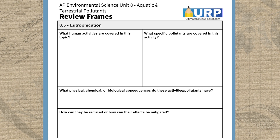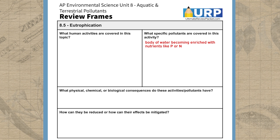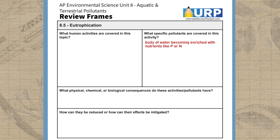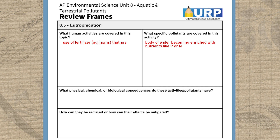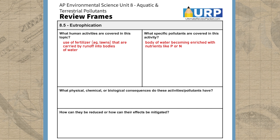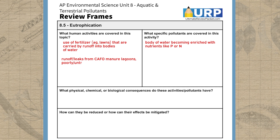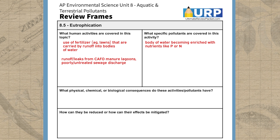Let's go through an example of how you can use this Unit 8 frame review to review topic 8.5, which is eutrophication. First, we need to remember that eutrophication is the process of a body of water becoming enriched with nutrients like phosphorus or nitrogen. One of the most common human activities causing this is the use of fertilizers on agricultural fields, lawns, or golf courses — these fertilizers are then carried into bodies of water by runoff. Other activities like poorly managing CAFO manure lagoons or insufficient human wastewater treatment can also lead to eutrophication.